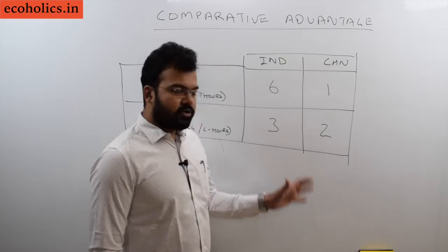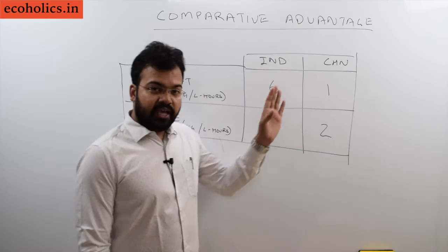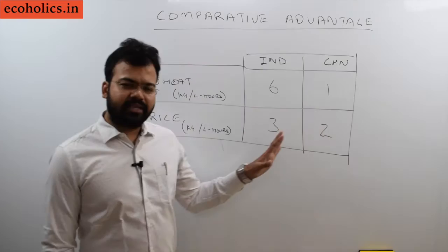In this particular picture, in these particular numbers, it is clearly visible that India is having the absolute advantage in both commodities, in wheat as well as in rice. It means India can produce wheat and rice more efficiently than China. So China is having absolute disadvantage in both commodities. These are hypothetical figures, just for the sake of example.